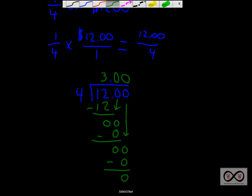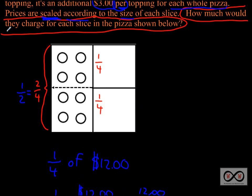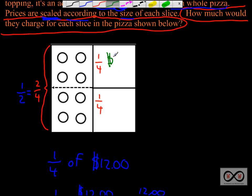We can see that the first small slice is $3. And the second slice is the same area of the pizza, so it's also $3. Logically, 3 plus 3 equals 6, so you could expect the other half of the pizza — the large slice — to be $6.